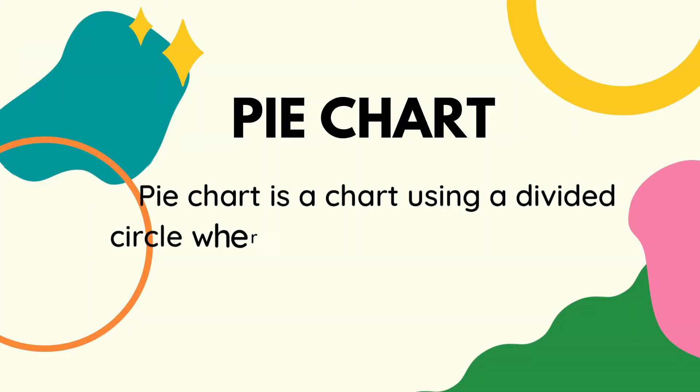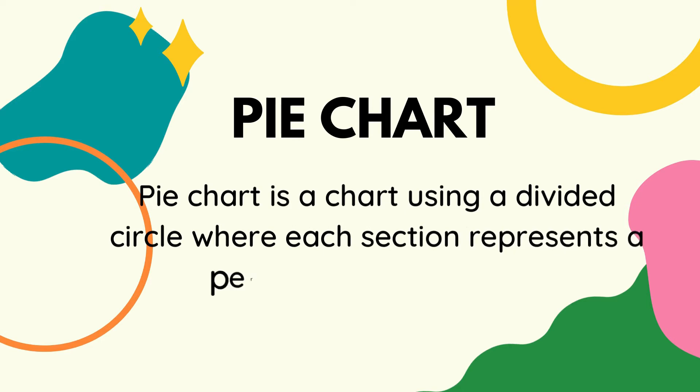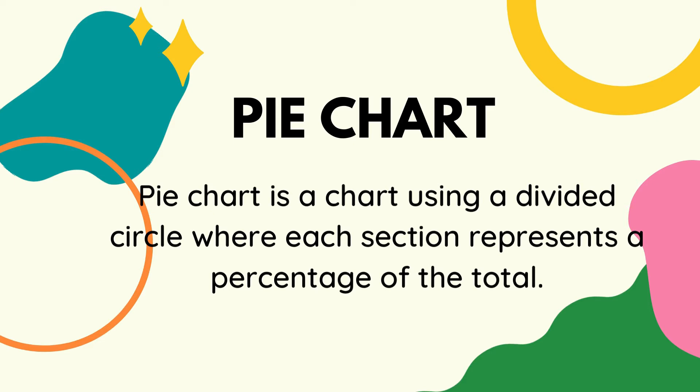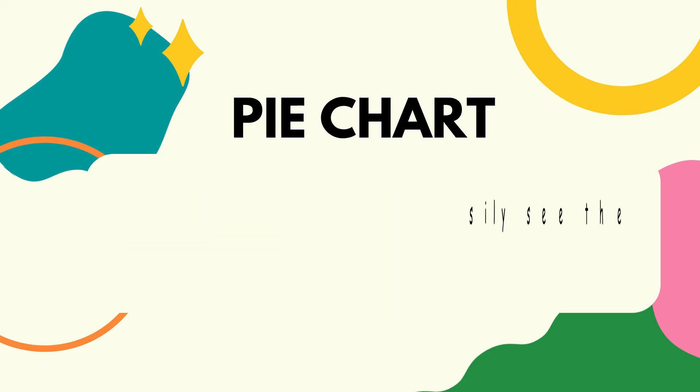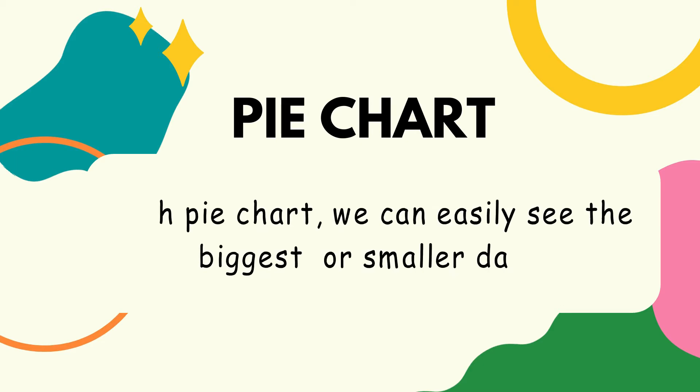A pie chart is a chart using a divided circle where each section represents a percentage of the total. With a pie chart, we can also see the biggest or the smallest data.